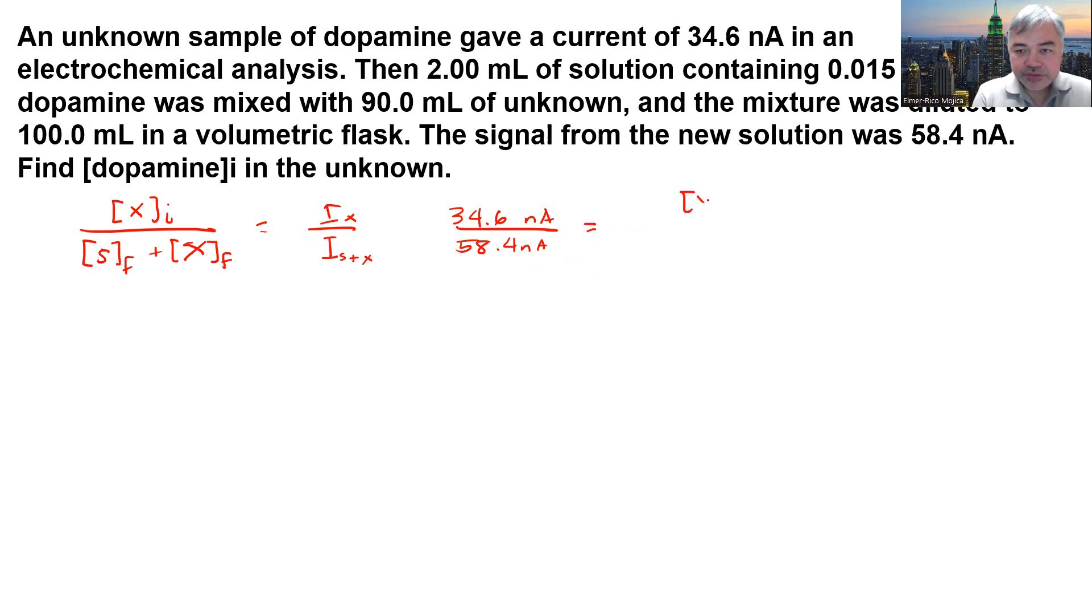For Xi, that's what we're looking for. Now for SF, the final concentration of the standard: initially we have 0.0156 molar, and then we have 2 mL of that in 100 mL, giving us around 0.000312.